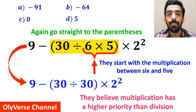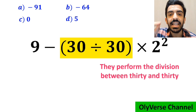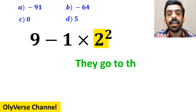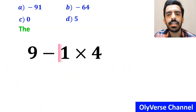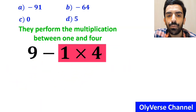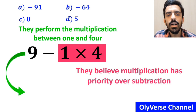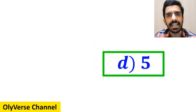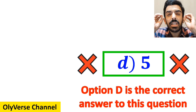So they rewrite this expression as 9 minus 30 divided by 30 instead of parenthesis, then multiply it by 2 squared. In the next step, they perform the division between 30 and 30 and simplify this expression to 9 minus 1 multiplied by 2 squared. Next, they go to the exponent and simplify it to 9 minus 1 multiplied by 4. In the final step, they perform the multiplication between 1 and 4, and rewrite this expression as 9 minus 4, which eventually gives them the answer 5. Then they quickly say that option B is the correct answer — however, that's definitely wrong.